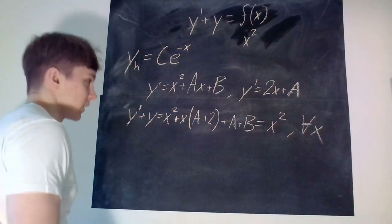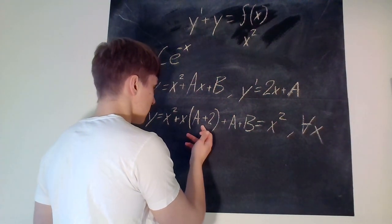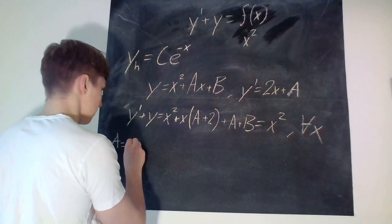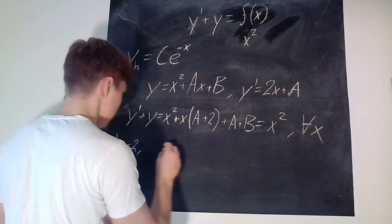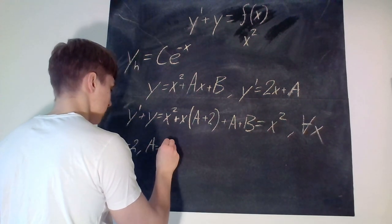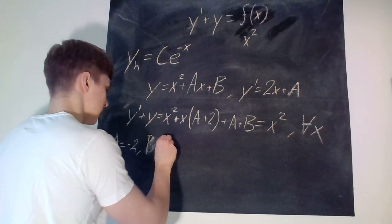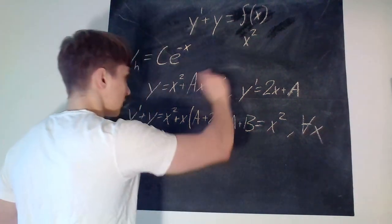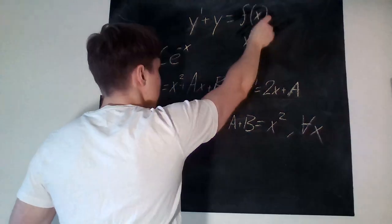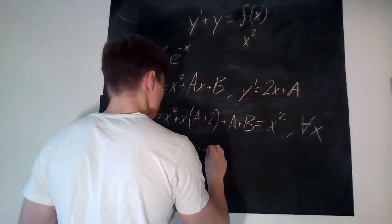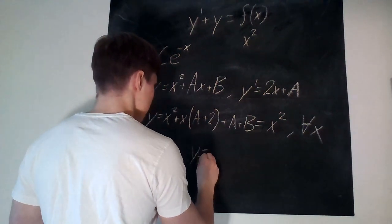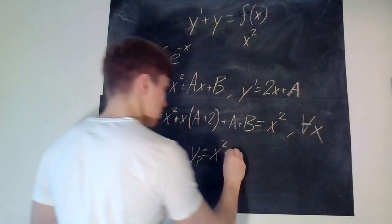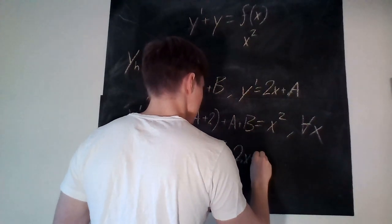What does that mean? Well, a plus 2 is supposed to be equal to 0, meaning that a is equal to minus 2. And therefore a plus b is supposed to be equal to 0, so b is therefore equal to 2. So the particular solution when f of x equals x squared is y equals x squared minus 2x plus 2.